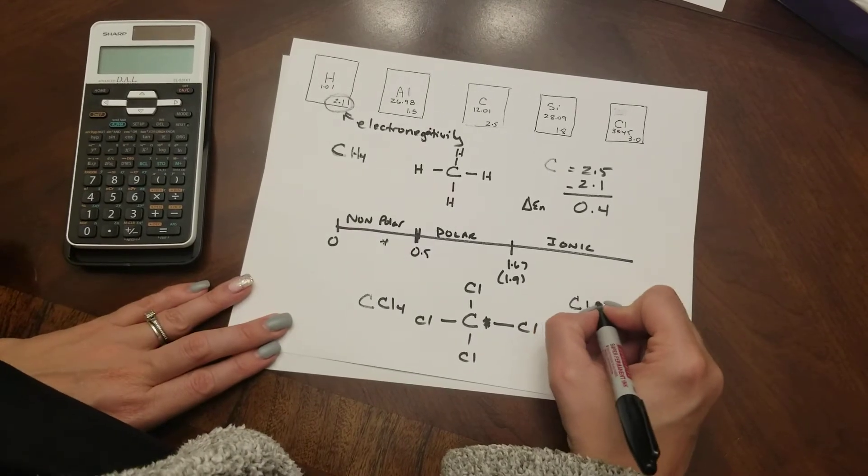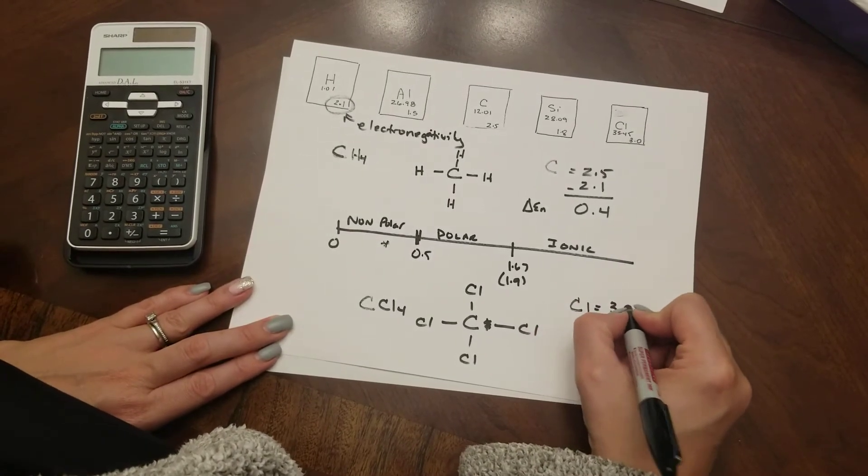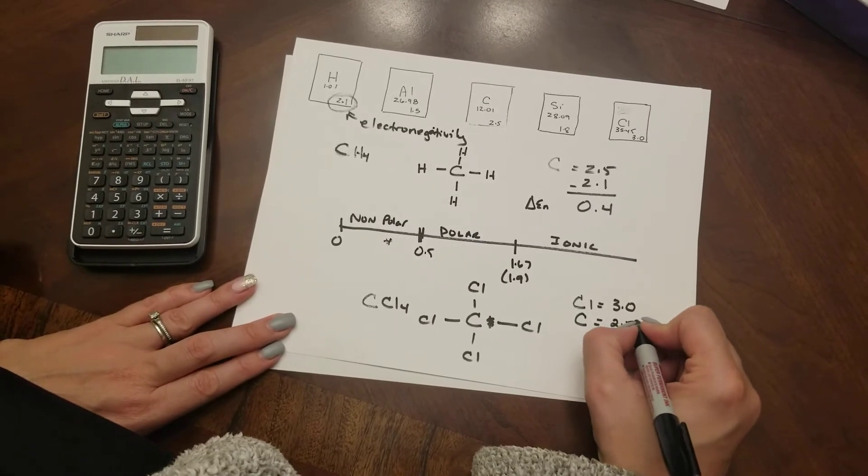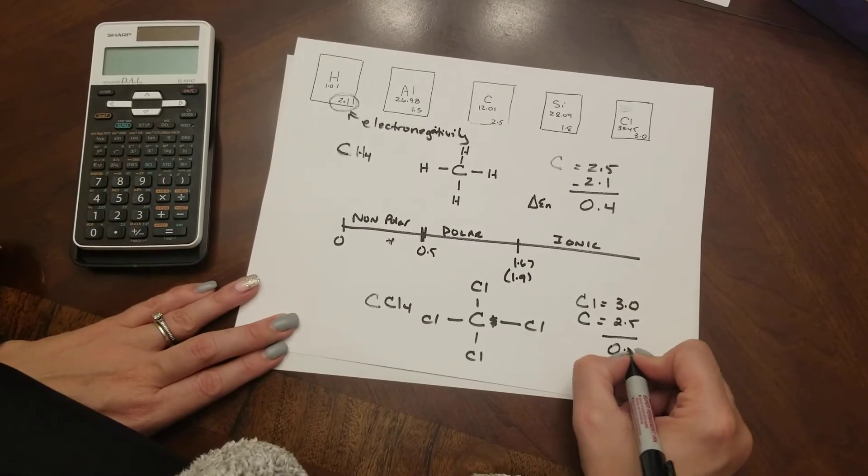If I look at chlorine's electronegativity we get 3.0 and again carbons is 2.5. Here the difference is 0.5.